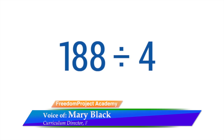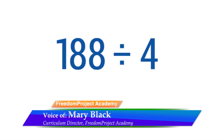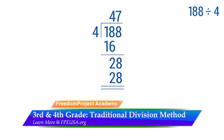Let's divide 188 by 4 in the traditional manner taught in FPA's 3rd and 4th grades. We can't divide 1 by 4, so we divide 18 by 4. There are 4 fours in 18. We put the 4 over the 8, multiply 4 times 4, and put the 16 under the 18. We subtract 16 from 18 and get 2. Then we bring down the 8 and have 28. 4 goes into 28 seven times. Put the 7 over the 8, and multiply 7 times 4 to get 28. Finished.